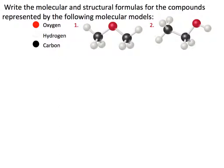First we're given a diagram that shows us what each of the colored spheres means. A red sphere is oxygen, a white sphere is hydrogen, and a black sphere is carbon.